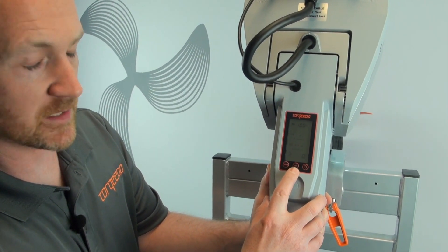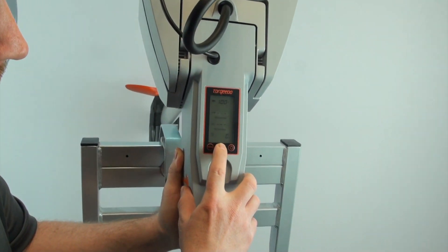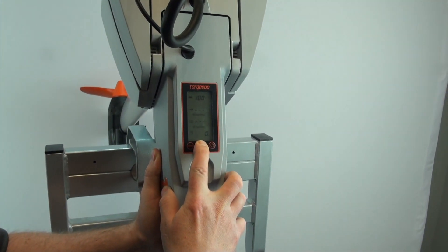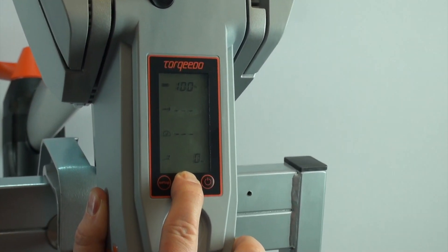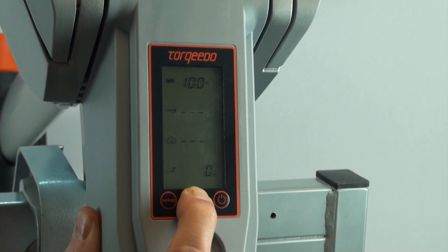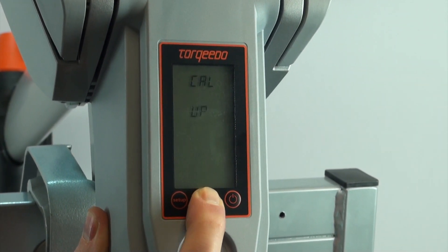Now we're going to hold down your center button, which is CAL, for 10 seconds. After 10 seconds, CAL UP will be displayed. There we go.